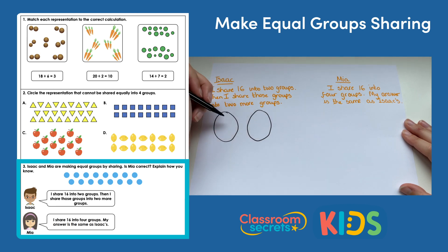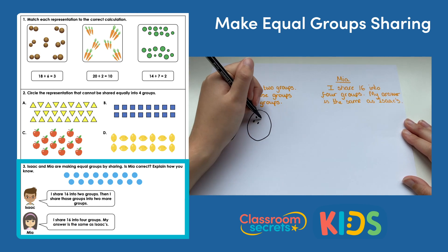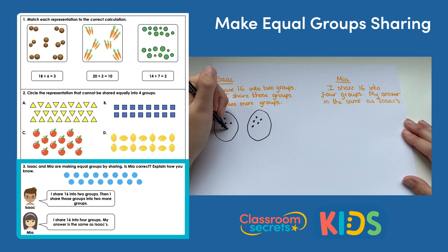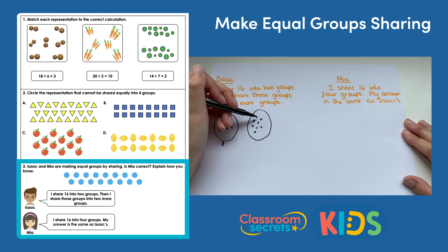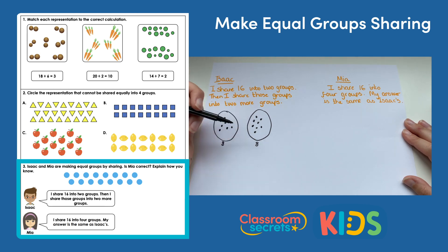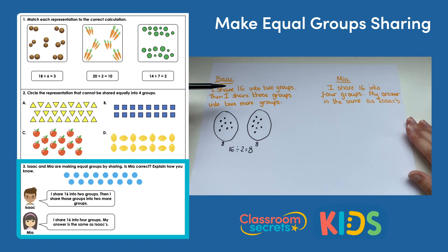We're going to put a dot in each group until we get to 16, sharing into two groups. We get eight in the first group and eight in the next group. So Isaac did 16 divided by two, which gave him eight. But remember, he's sharing those groups into two more groups.